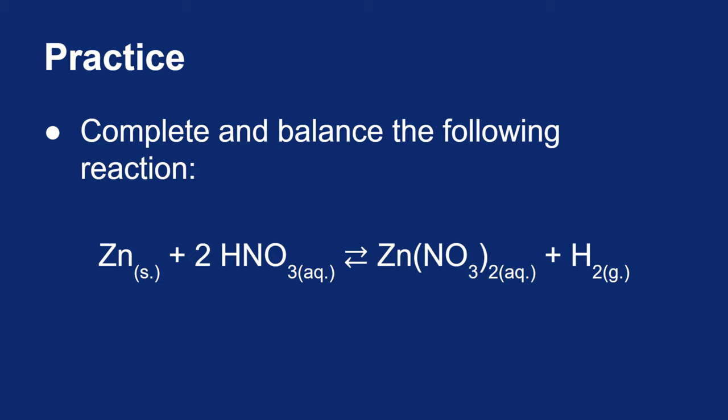So you end up making zinc nitrate, Zn(NO3)2, and elemental hydrogen, H2. To balance it, you're going to have to put a 2 in front of your nitric acid to give yourself two hydrogens and two nitrates. This was an example of a single replacement reaction.